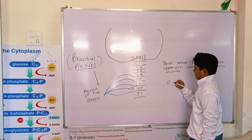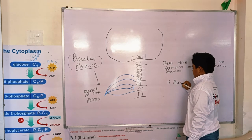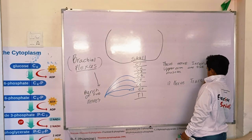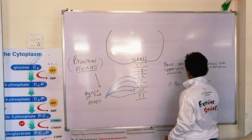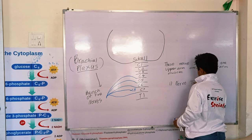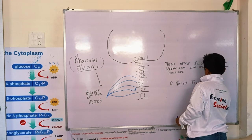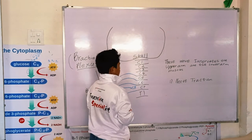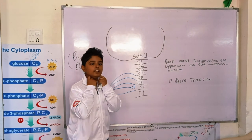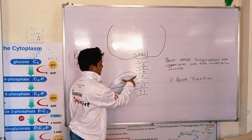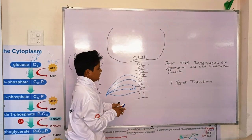First is nerve traction. Nerve traction happens when the neck gets a sudden pull or stretch. Then these nerves also stretch. That is called nerve traction.